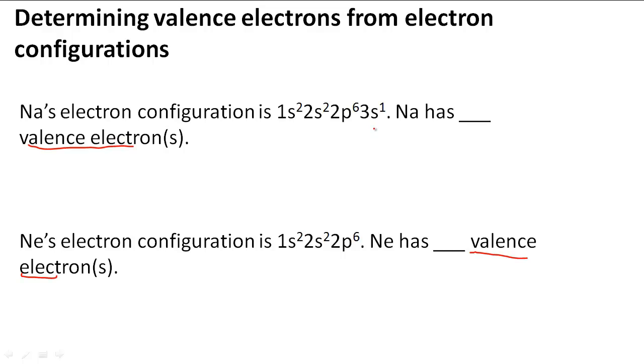Remember, valence electrons are at the highest energy level. The highest energy level we have here is 3. So we need to figure out how many electrons are in this energy level 3. It says 3s¹, which means there is just one valence electron for Na's electron configuration. So Na only has one valence electron.